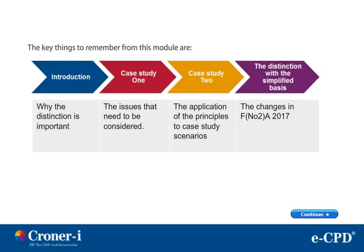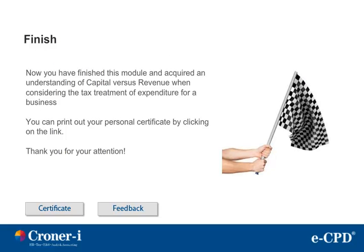In summary, the key things to remember from this module are: 1. The basic distinction between capital and revenue. 2. The principles of how you would consider arguing these cases. 3. Guidance from the decided cases. And finally, the changes in the Finance No. 2 Act 2017. I trust that you have found this module, which deals with the capital versus revenue question, informative. You can print out your personal certificate by clicking on the link. Goodbye and thank you for using CCH eCPD.